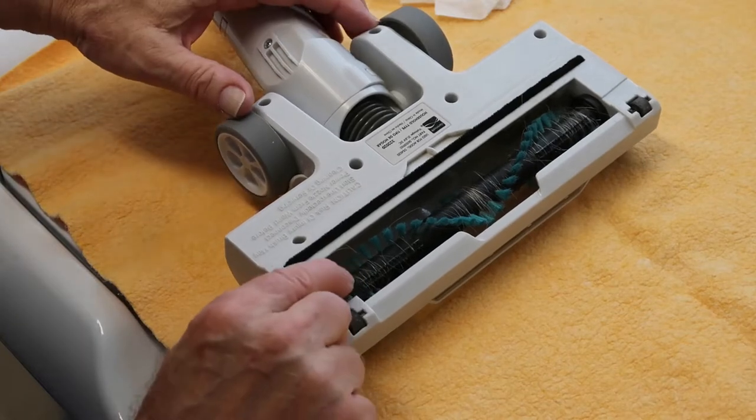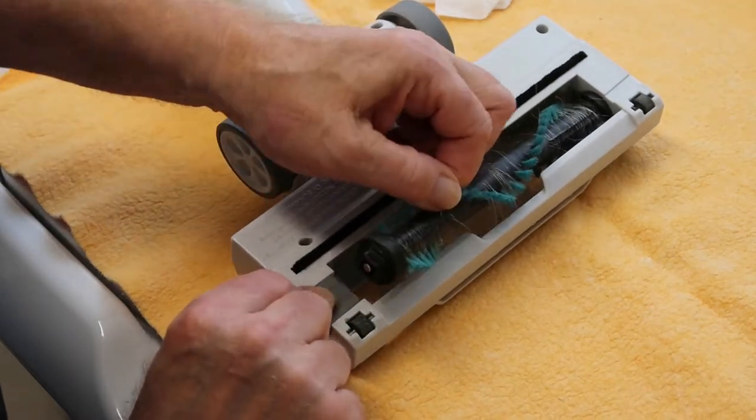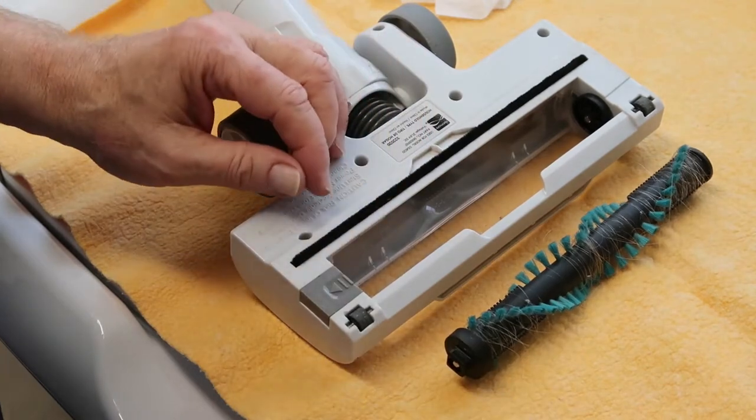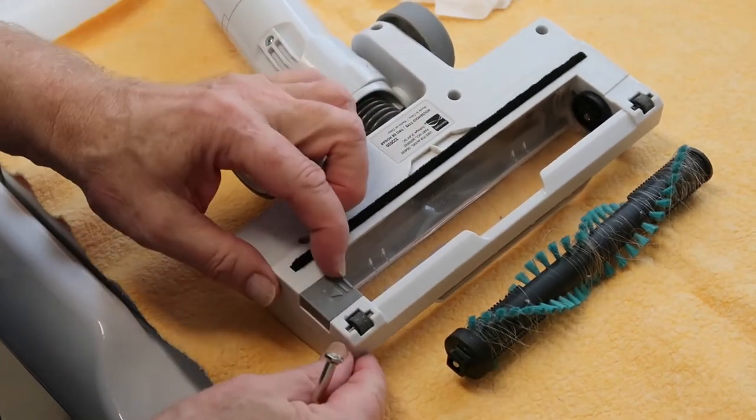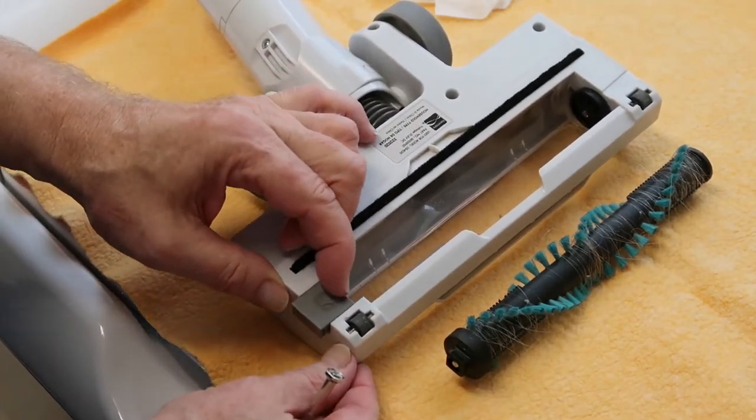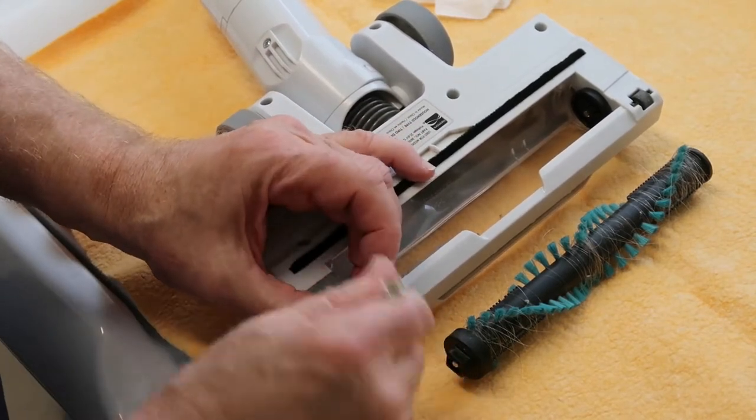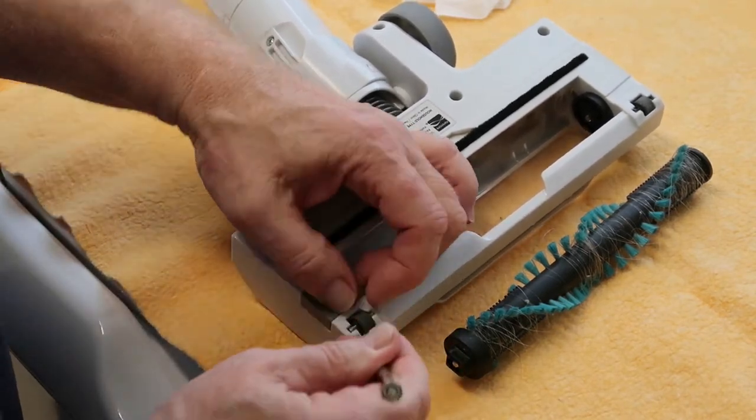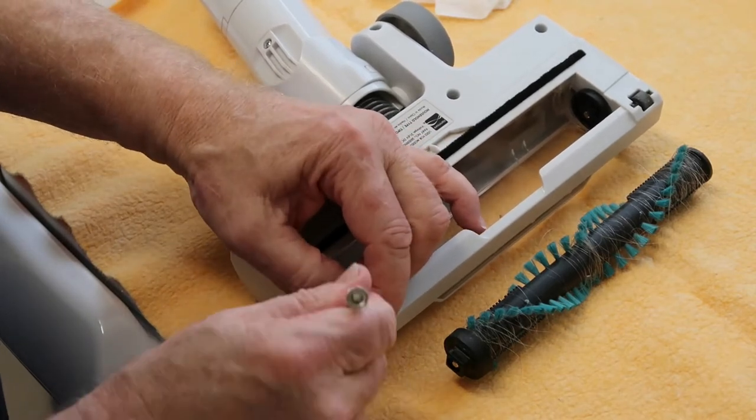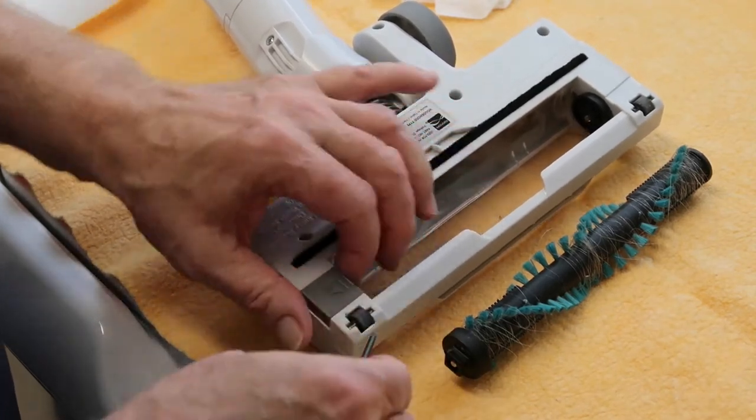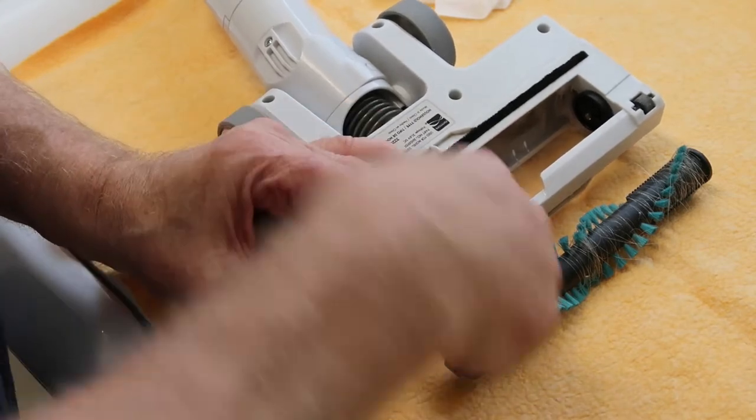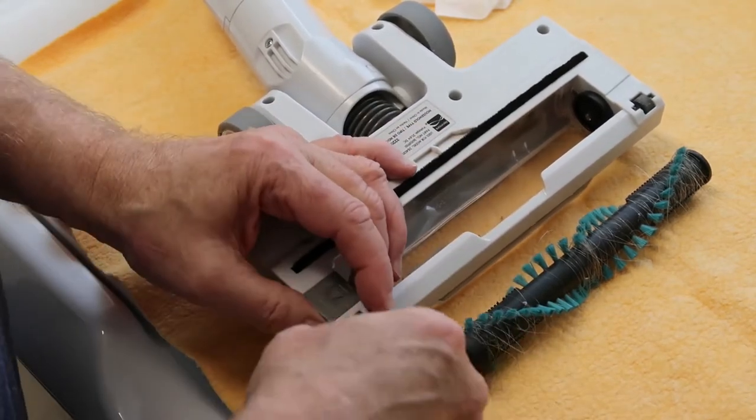All right, for the base, the first thing we want to do is take this out. And that's just a simple spring right here. And then we're going to take these wheels out. Be really careful, because the wheels and the axle are not attached. If you lose that axle, you're going to have some problems. So just get something small to pry that out with.